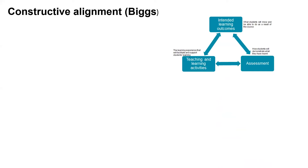Touching on constructive alignment: when we talk of alignment between these elements, we look at the intended learning outcomes of your course, how you are going to assess this — how do you know students have learned something and how will they demonstrate what they've learned — and also teaching and learning activities that help students achieve those intended learning outcomes.